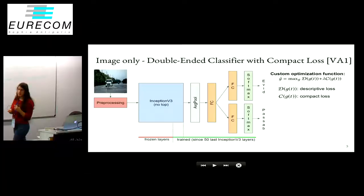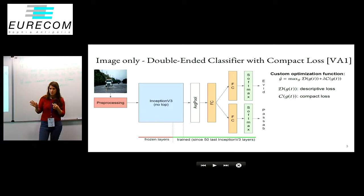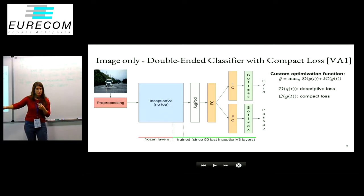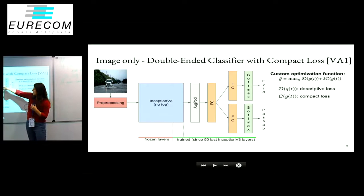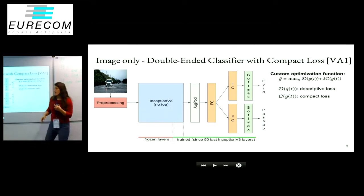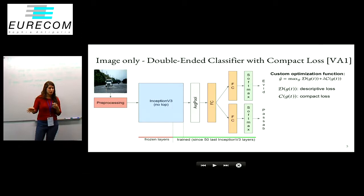Then for the visual part, we took the Inception V3 network, pre-trained on ImageNet. We froze the first layers of the network and only trained the last 50 layers. And then we did the same approach with two fully connected layers in parallel, training on both tasks. And we also thought that this task was pretty similar to a one-class classification problem. And I'll explain the difference.